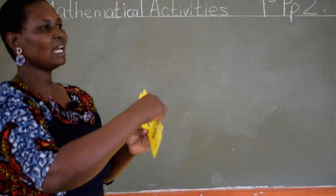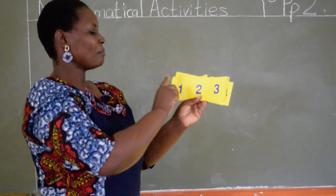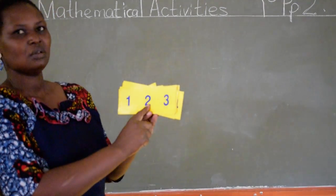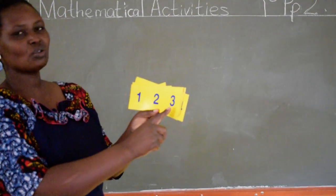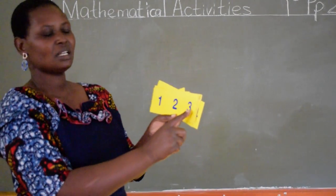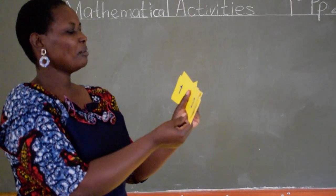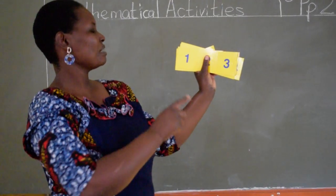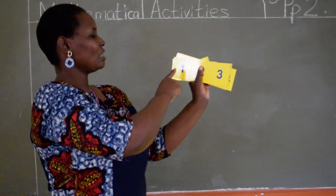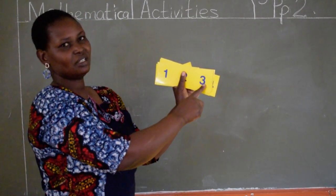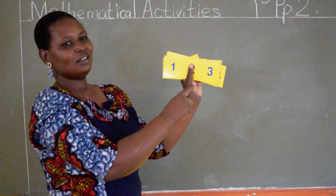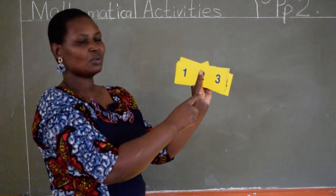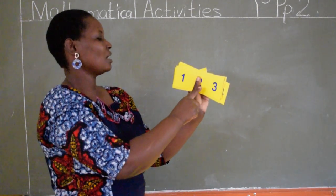Now you realize that from number 1 we go to number 2, and after number 2 we go to number 3. Which number is missing? There is a number missing between number 1 and number 3. Yes, Walter. It is number 2. Number 2 is the missing number.